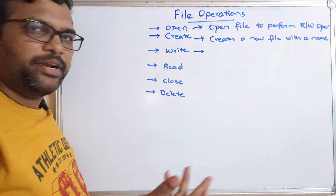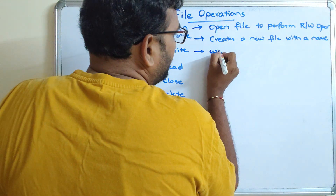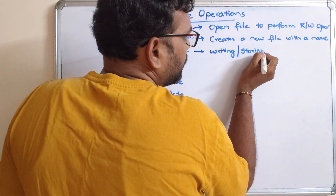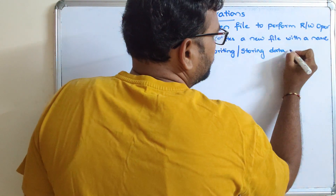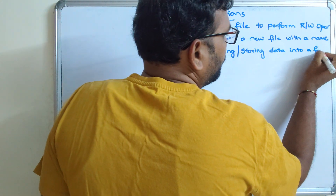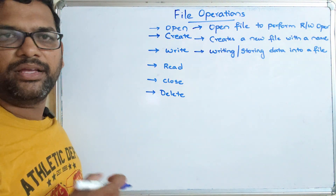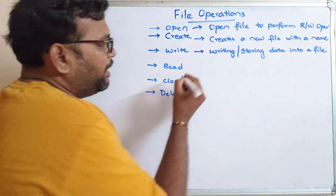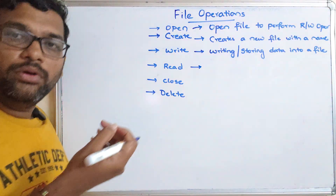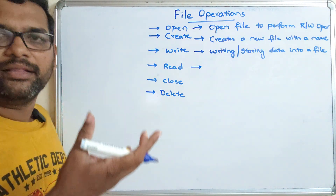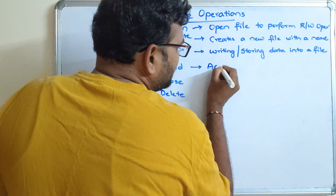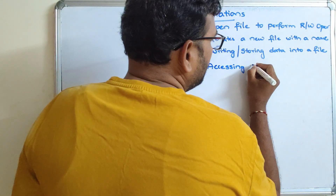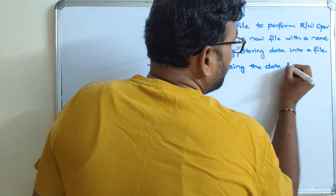Once the file is created and opened, the write operation can be performed. Write operation means writing or storing data into the file. The read operation is only for accessing the data — it is not meant for writing. Reading means accessing the data from a file.